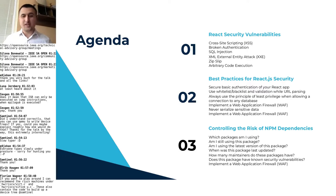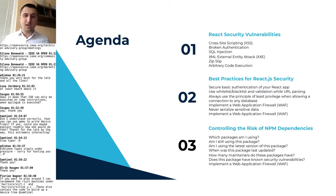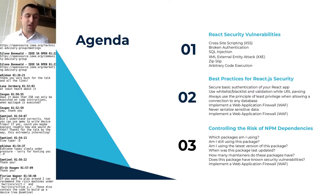The agenda. What I'm going to present today is split into three different layers. The first is React Security Vulnerabilities, which covers cross-site scripting, broken authentication, SQL injection, XML external entity attack — which is kind of rare in Node.js but still happens — zip slip, and arbitrary code execution. I'll also show best practices for React.js security, secure base configuration, whitelist and blacklist validation, and the principle of least privilege. I'll also cover how to control the risk of API dependencies.